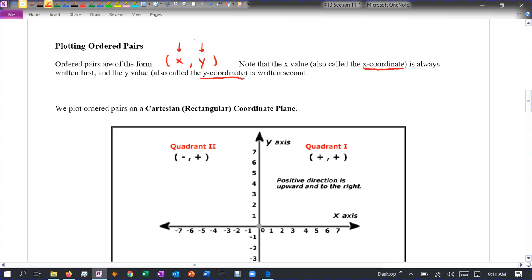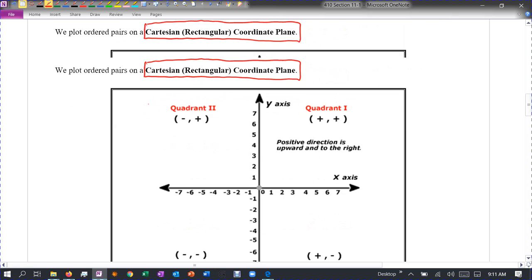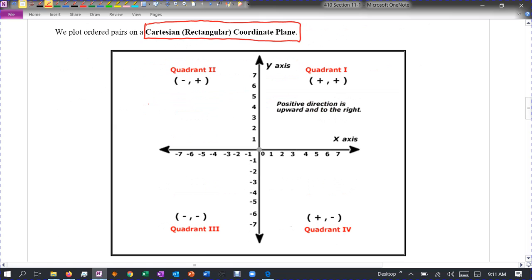So when we plot ordered pairs, we plot them on what's called the Cartesian or rectangular coordinate plane. So this is just a flat sheet of paper that's broken up into four sections. So basically, we just took a flat sheet of paper, drew a horizontal and vertical line, and then what we break that up into is what are called four quadrants.